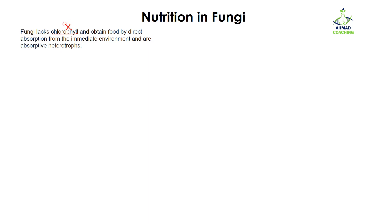Fungi lack chlorophyll, and we know that chlorophyll is essential for photosynthesis, which helps in the production of food. This means that fungi cannot prepare their own food because there is no chlorophyll present. However, fungi obtain their food directly by absorption from their immediate environments.